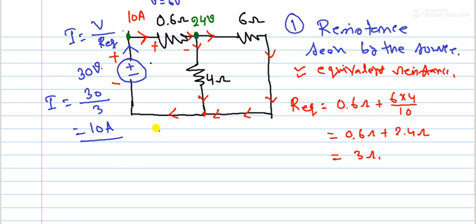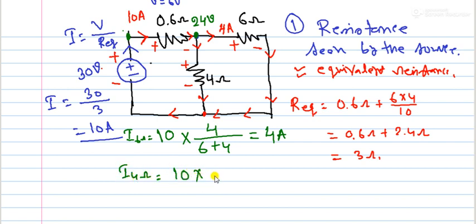Now we'll use current division rule. The total current is 10 amperes. Using the formula: total current multiplied by opposite side resistance divided by total resistance. So current through 6 ohm is 10 times 4 divided by 10, which equals 4 amperes. Current through 4 ohm is calculated similarly.